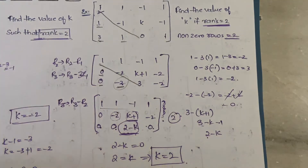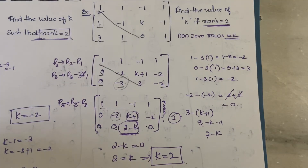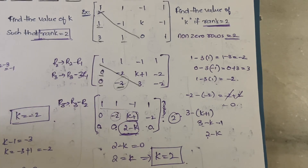This is all about this video. In the next video we'll start learning about the canonical form, also called the normal form, which is also used to find the rank of a matrix. Thanks for watching till the end — if you have any doubts, let me know in the comment section and I'll definitely try to clear them.